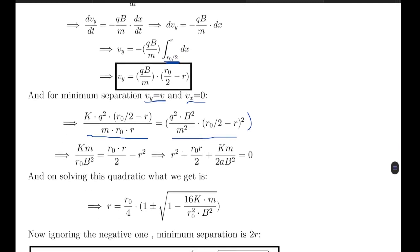And forming the quadratic and solving it, finally we get the value of r equals to r naught by 4 times (1 plus or minus root of 1 minus 16 K m over r naught squared B squared). Now ignoring the negative root and minimum separation is 2r.